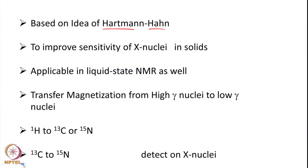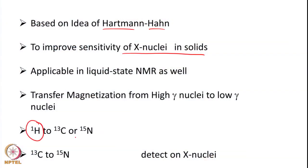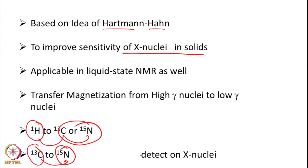This was conceptualized in solids but is also applicable in liquid state. The crux is we want to transfer magnetization from high-gamma nuclei to low-gamma nuclei — such as proton to carbon-13 or nitrogen-15, or carbon-13 to nitrogen-15. This transfer enhances the sensitivity or signal of the low-gamma nuclei. In solid state NMR we need to detect on X nuclei, which is why we need to transfer polarization to enhance their sensitivity.